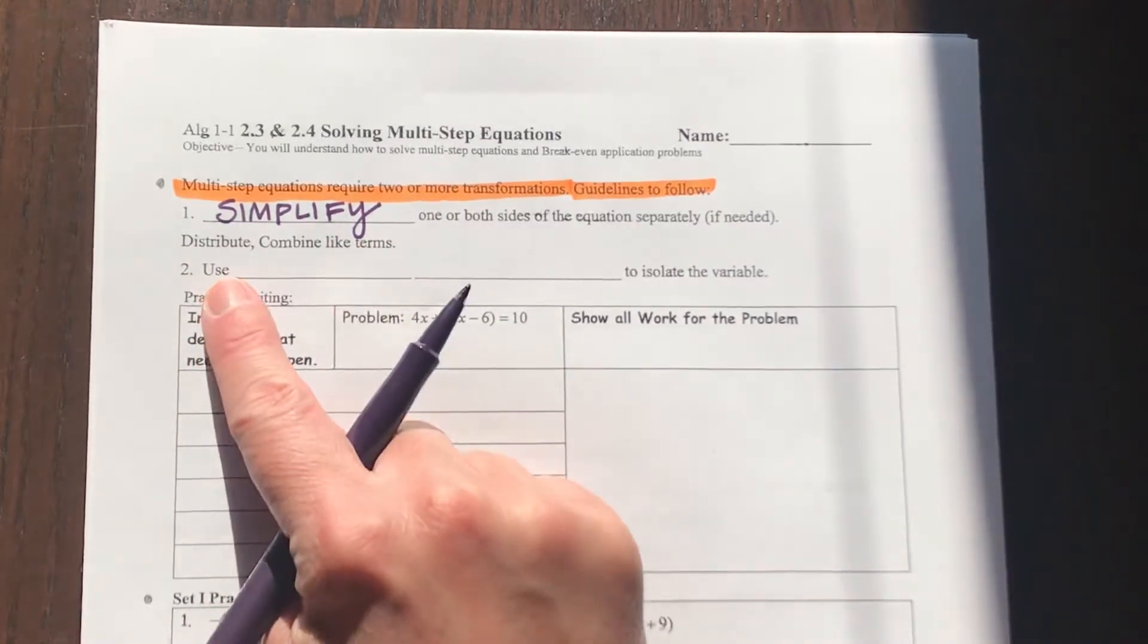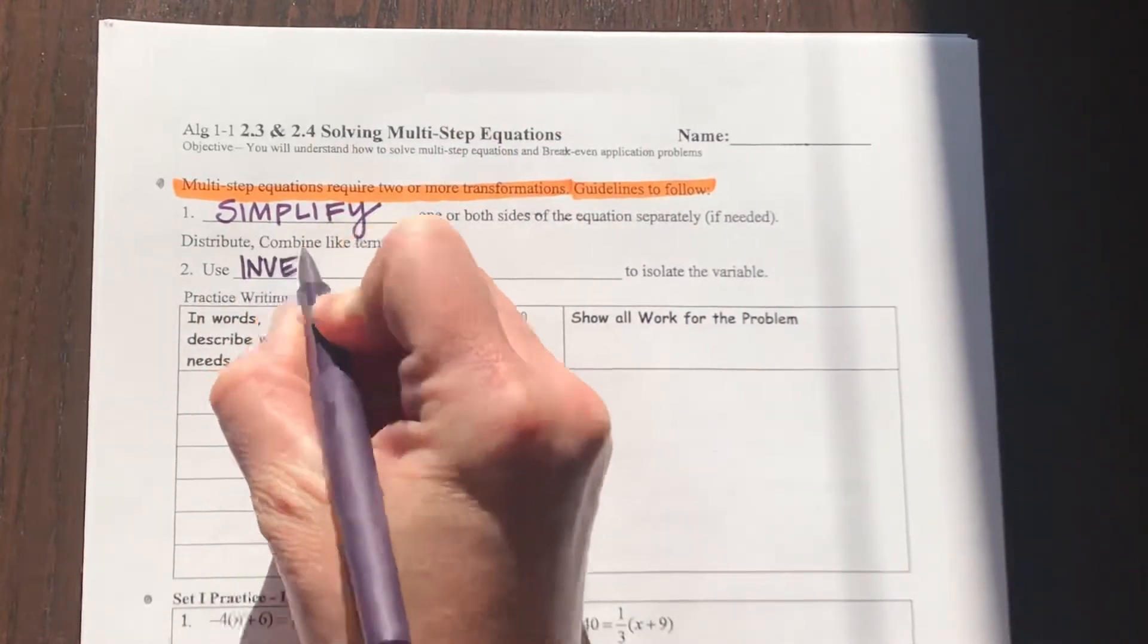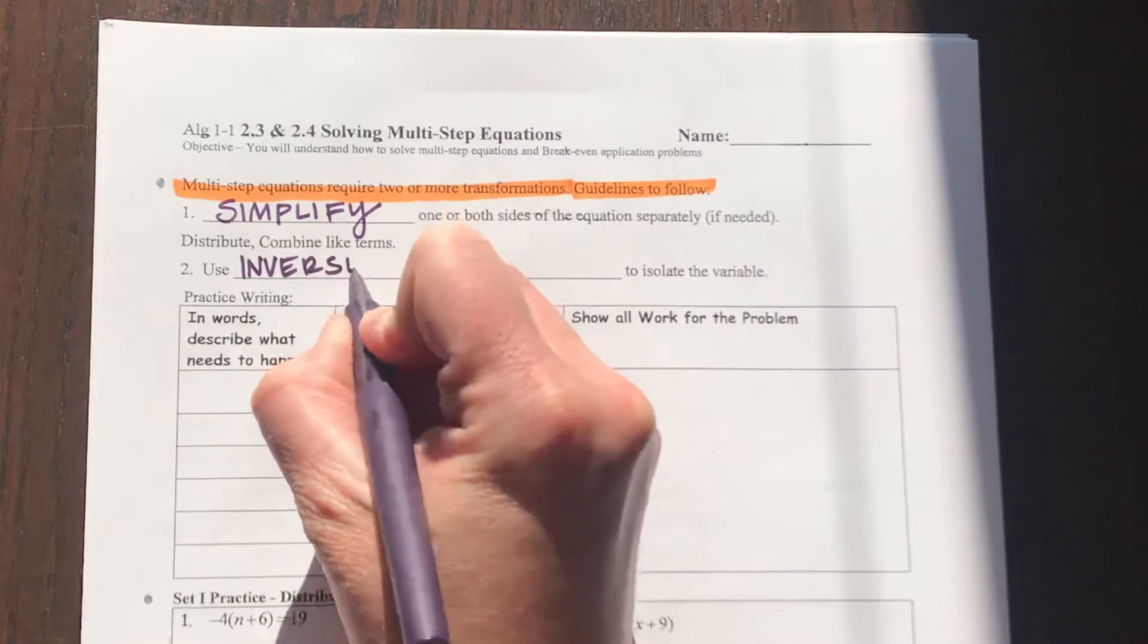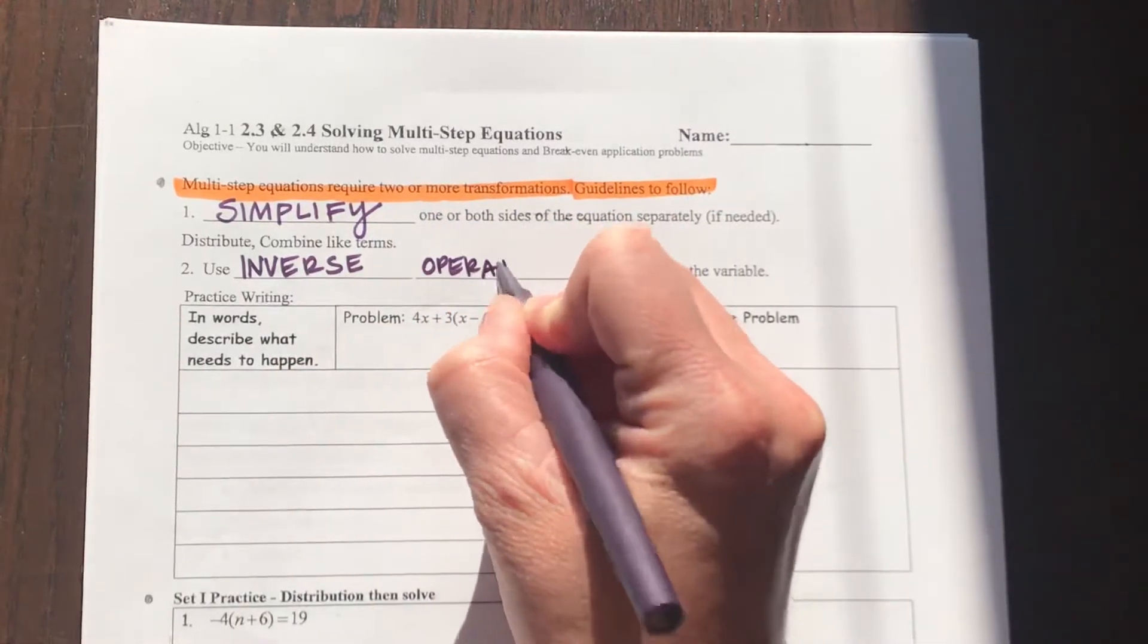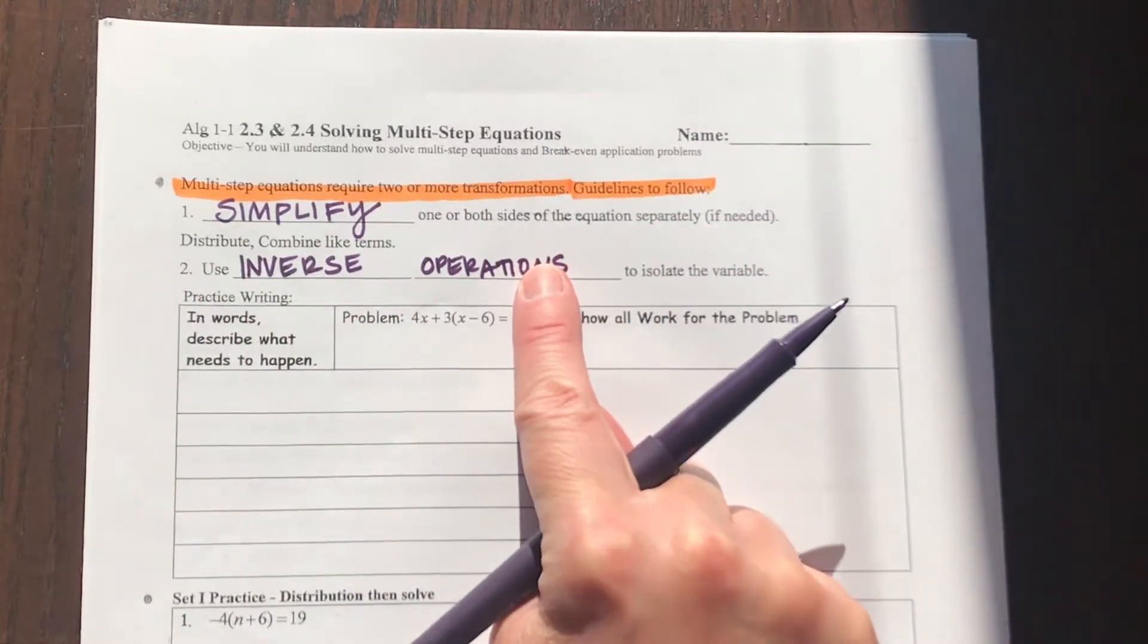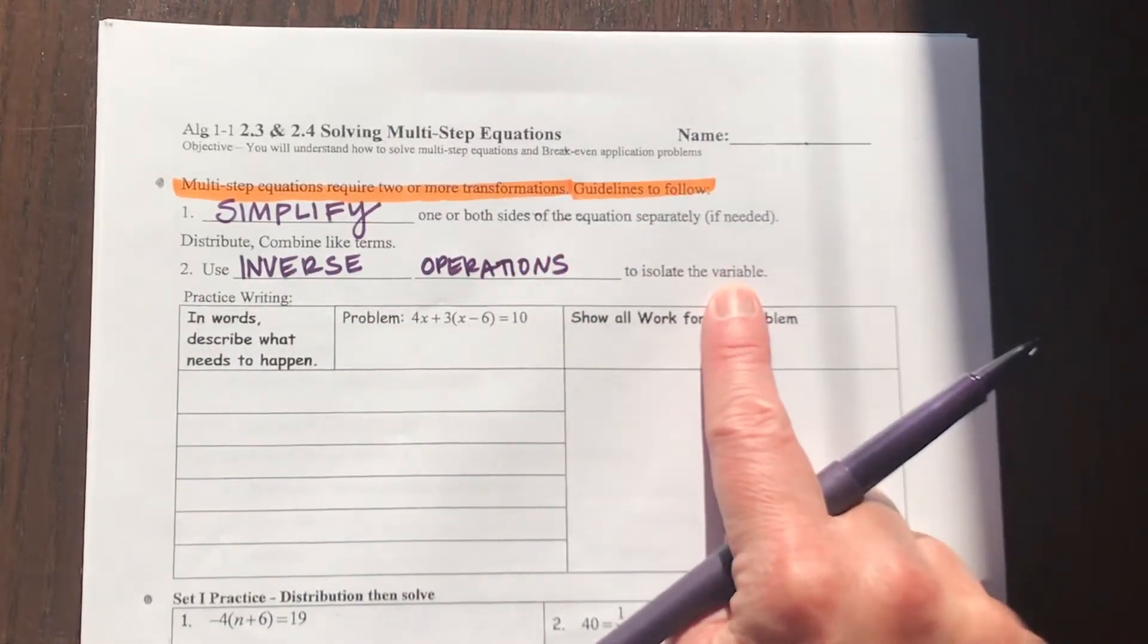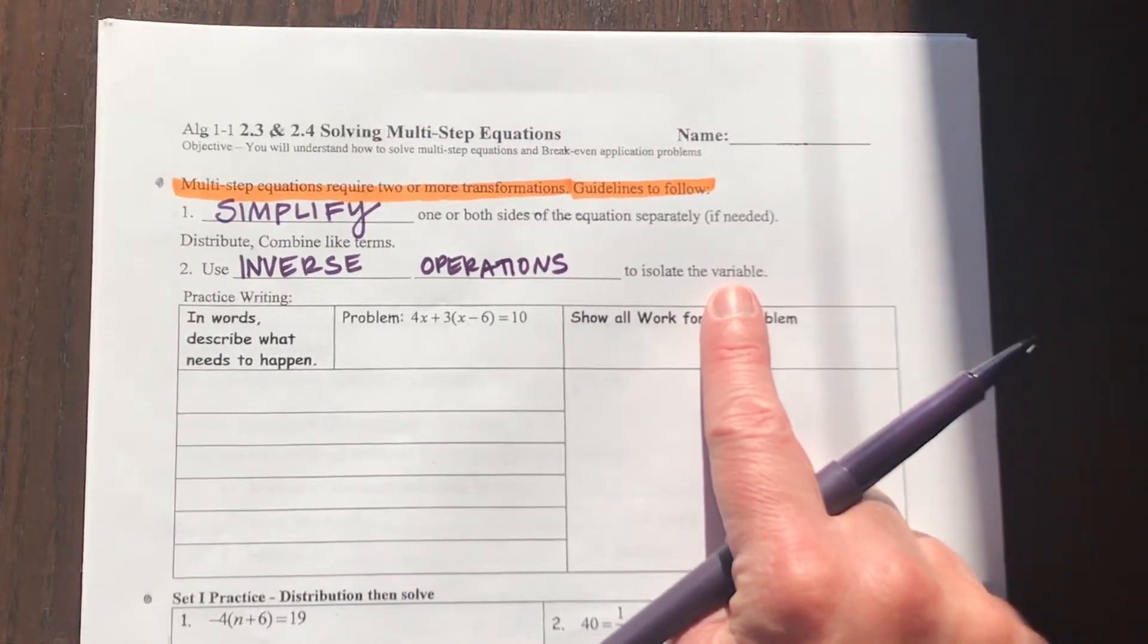Then number two, we may need to use what is called inverse operations, and those inverse operations are going to help you isolate the variable of your equation. Most of the time, that variable is x, but not always.